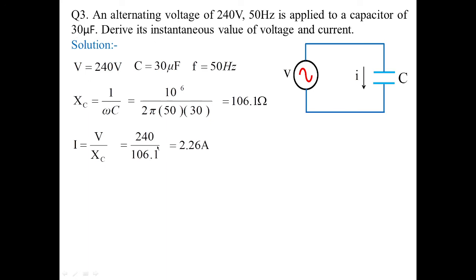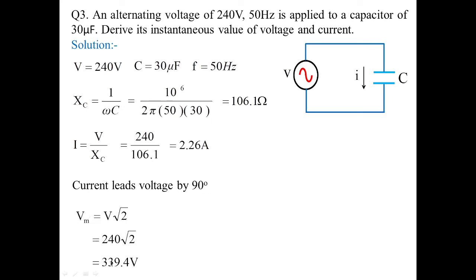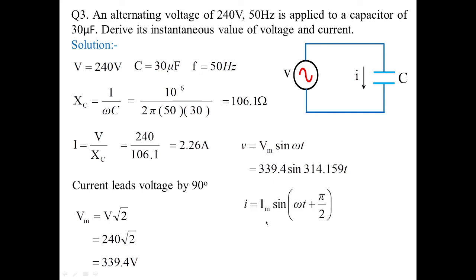When voltage is applied to a capacitor, the current leads voltage by 90 degrees, unlike the inductor case. The instantaneous current equation therefore uses a positive phase shift: i = Im sin(ωt + π/2) = 2.26√2 sin(314.159t + π/2). This is how we calculate the instantaneous values of voltage and current for individual passive elements under sinusoidal input.